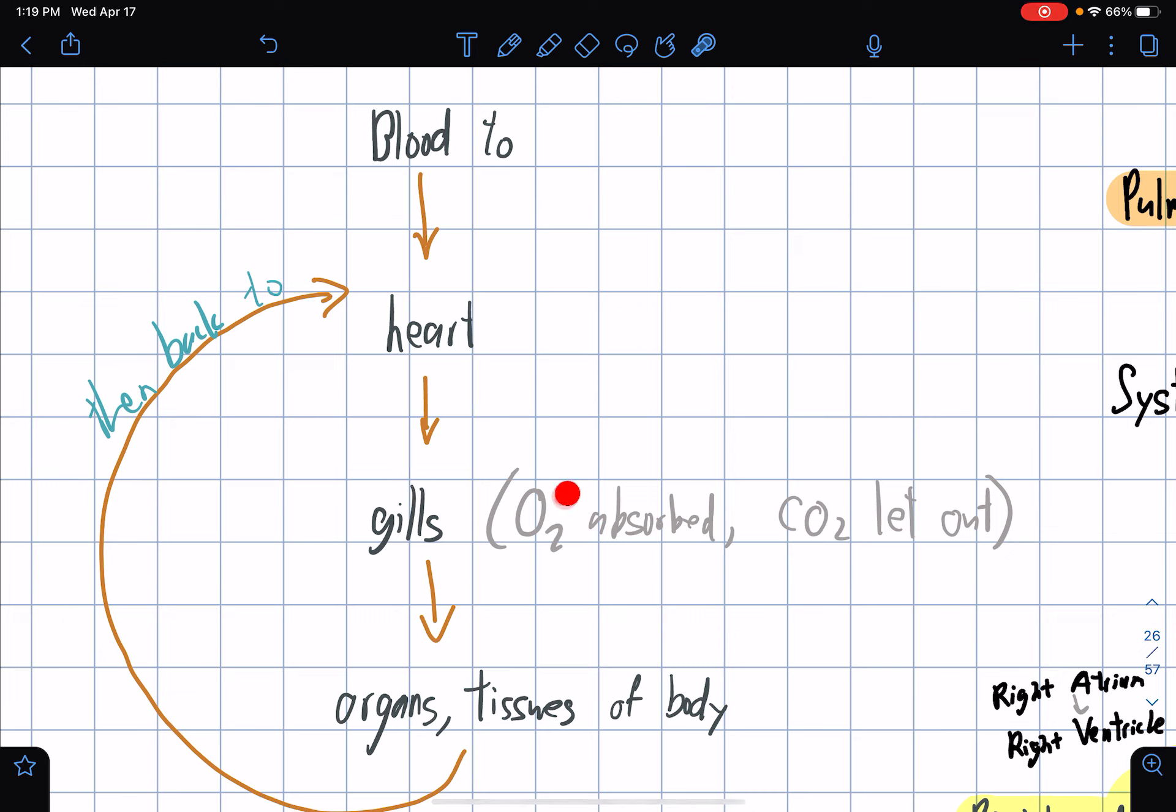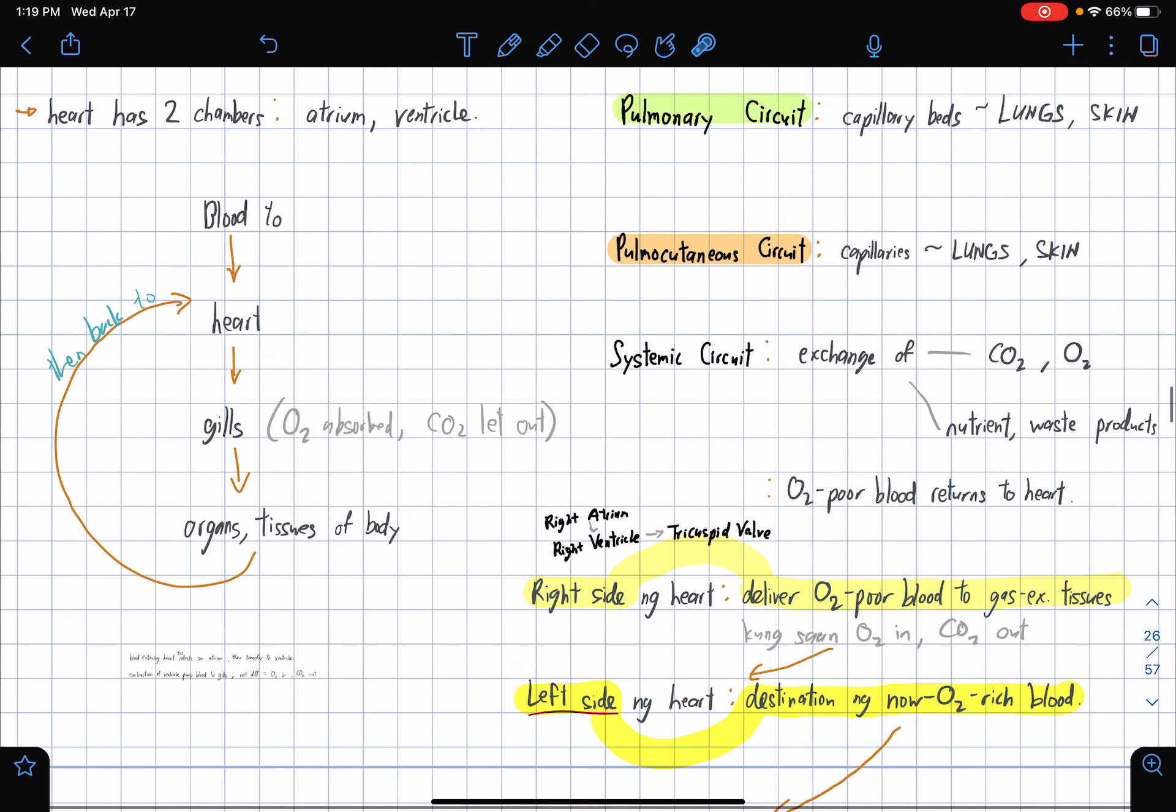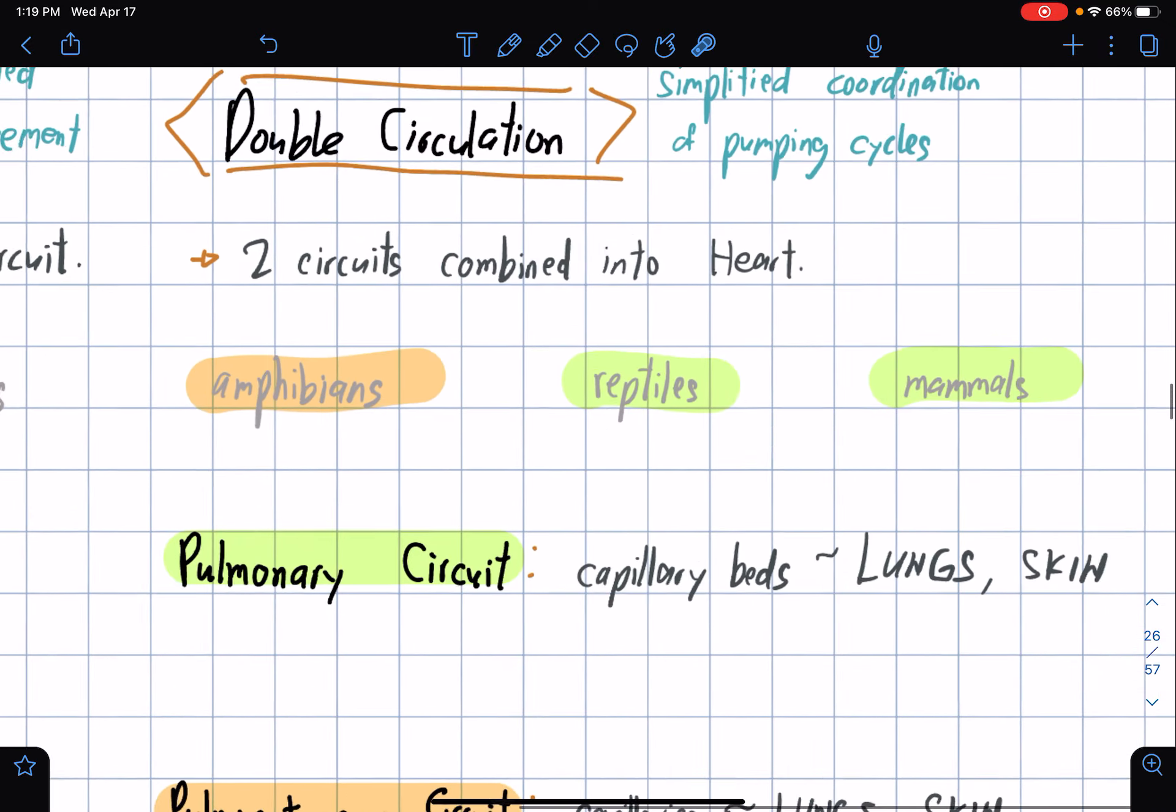A basic flow chart: it starts with the blood going to the heart and to the gills. This is where O2 is absorbed and CO2 is let out. If humans have lungs, they have gills. The blood is then distributed to the organs and tissues of the body and then they go back to the heart.